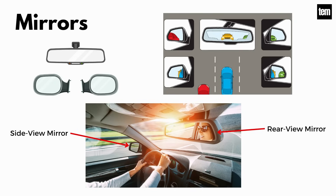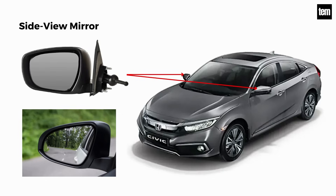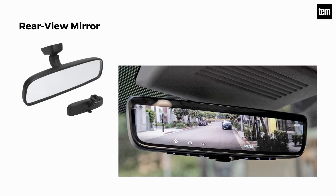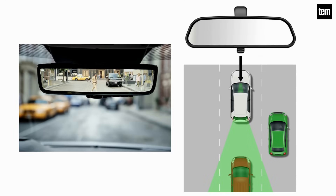Mirrors. In cars, side view mirrors and rear view mirrors are the two most common types. Side view mirrors, also known as wing mirrors, are located on the exterior of the vehicle to help the driver see areas behind and to the sides, outside the driver's peripheral vision. The rear view mirror is the rectangular mirror at the top of the windshield inside the car, providing an alert driving experience by allowing you to see behind the vehicle without turning your head. It is especially important when a vehicle is moving in reverse gear.